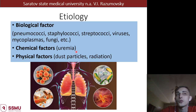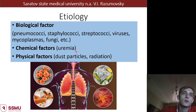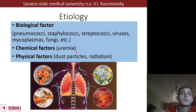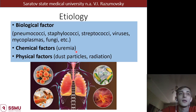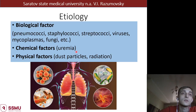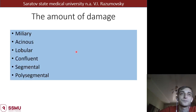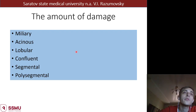Etiological factors may be biological and non-biological. Biological factors include pneumococcus, staphylococcus, streptococcus, mycoplasmas, fungus and so on. Chemical factors include uremia from kidney disorders. Physical factors include dust particles and radiation. The size of damage may vary: miliary (less than 5mm), acinose, lobular, confluent, segmental and polysegmental - related to the anatomical size of the injured area.